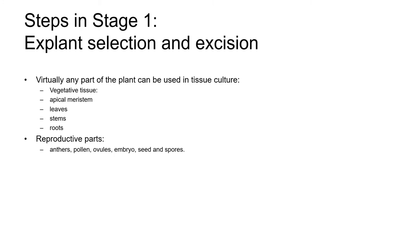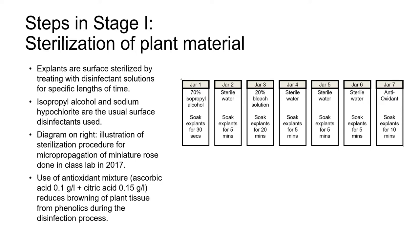For the most part in this unit, the material I'm going to present is based on stem tissue — vegetative tissue. We're not going to go into detail on how tissue culture techniques are used for reproductive plant parts. Before the plant material can be cultured in vitro it has to be as clean as possible. Explants are surface sterilized, usually by treating them with a series of disinfectant solutions and rinses. 70% isopropyl alcohol and sodium hypochlorite or bleach solutions are the usual surface disinfectants, and distilled water is used for the rinses. The process is often finished by soaking the explants in an antioxidant which reduces browning of the plant tissue caused by phenolics during the disinfection process.